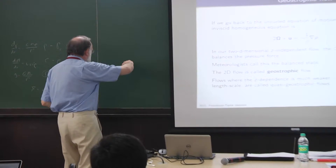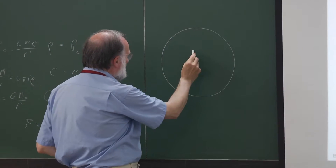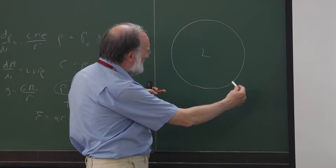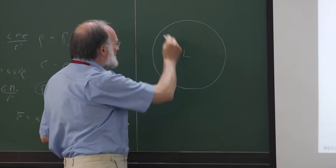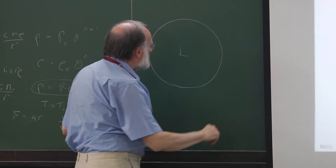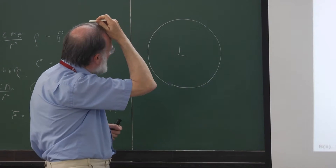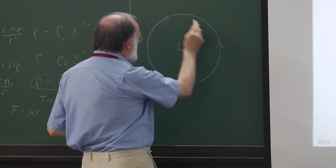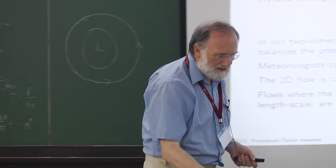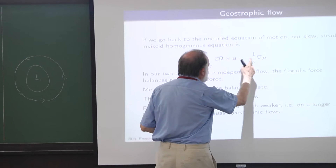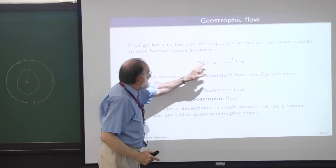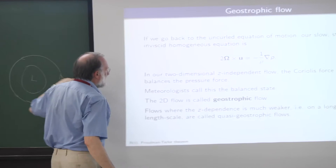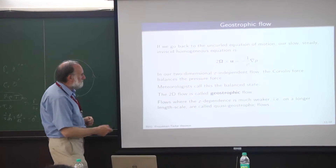Geostrophic balance is very important in weather prediction. You've all seen the charts with a low-pressure area and higher pressure towards the edges. You might expect the high-pressure fluid to flow inward, but it doesn't — it goes round and round. Cyclones go anticlockwise in the northern hemisphere because the pressure gradient is perpendicular to the velocity, with omega out of the board. That's a geostrophic balanced flow.